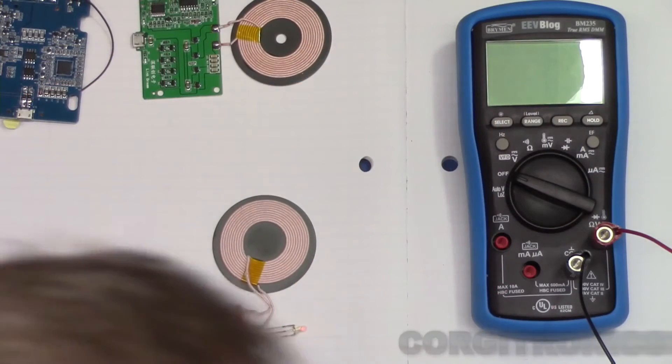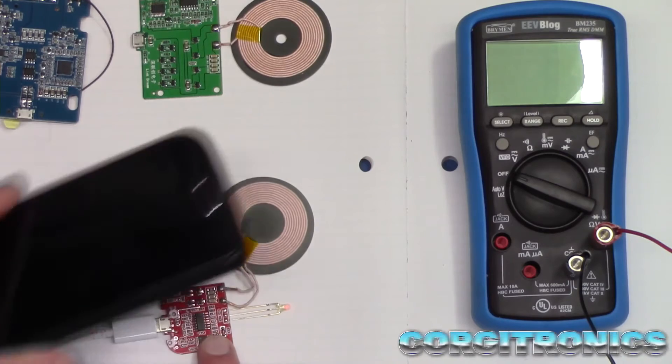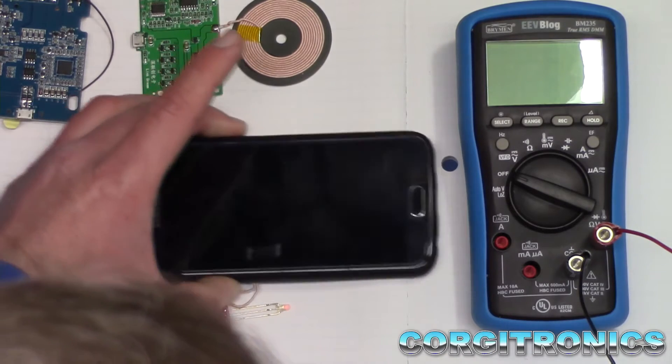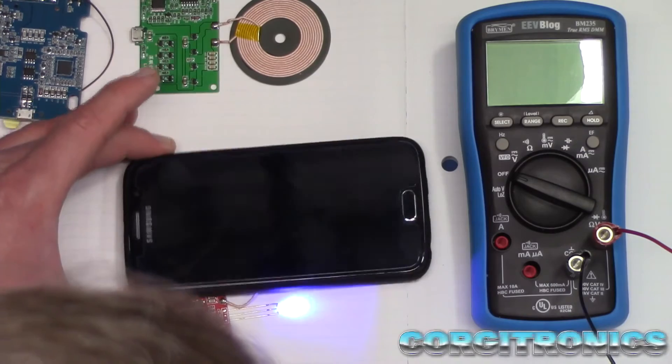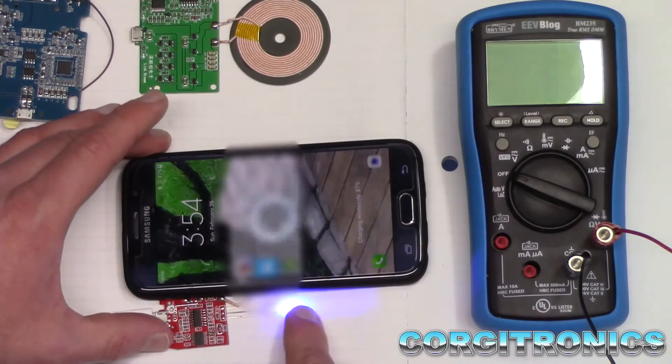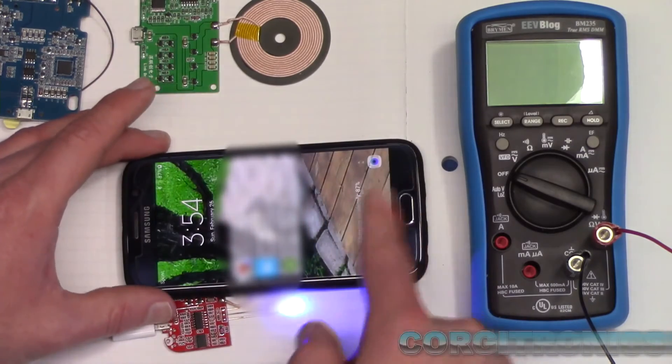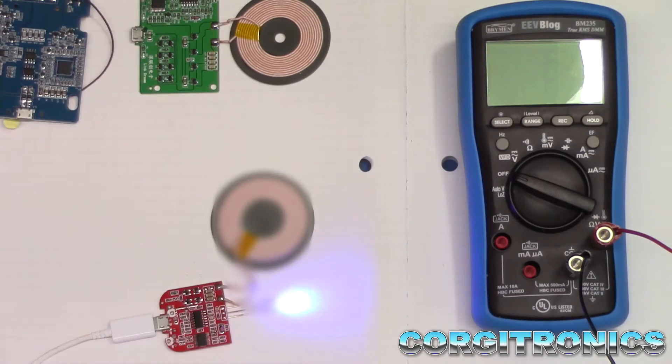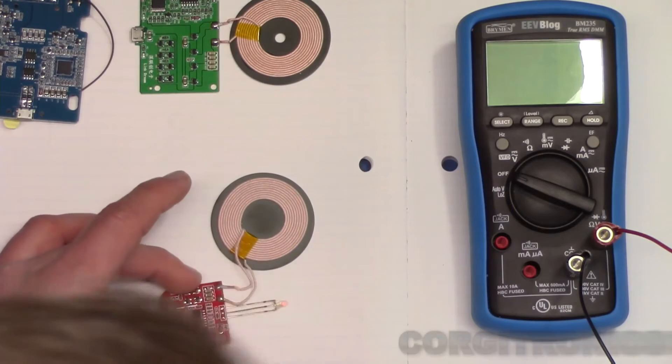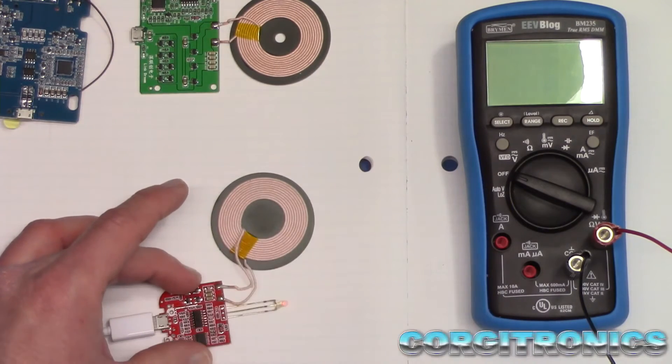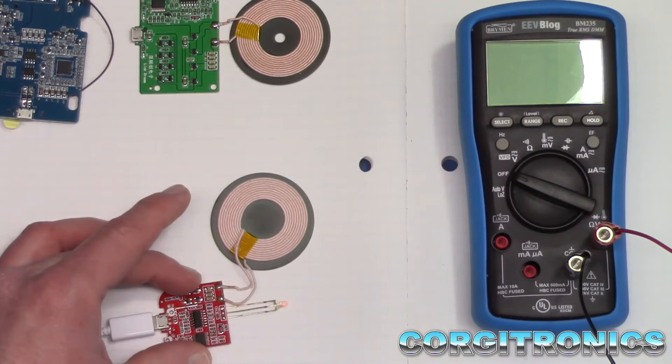All right, in normal operation, we just plug this in and set the coil somewhere in the right spot. There we go. We've got a bright blue light coming on. That's great. That's exactly what we want to see.